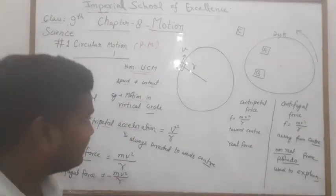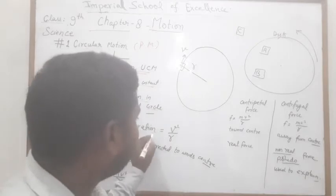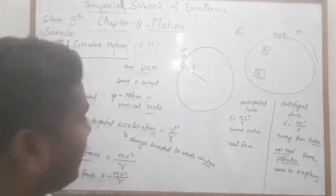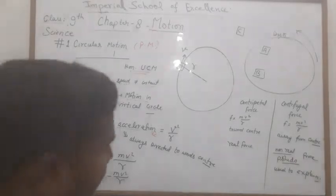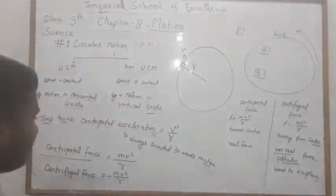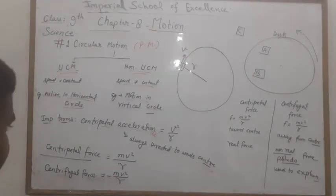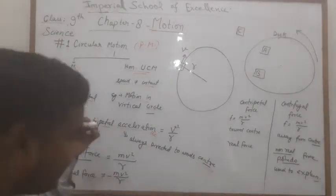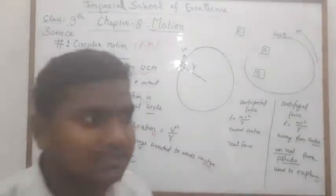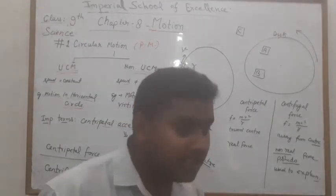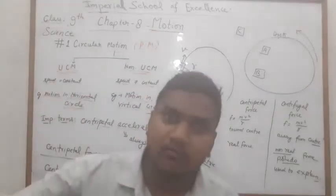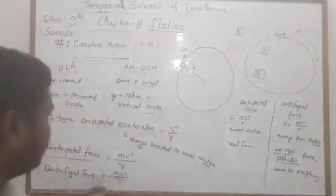So centripetal acceleration Ac की value निकाली: v² upon r, और यह हमेशा toward the center directed होता है। अब जब centripetal acceleration है, तो body का कुछ mass होगा। Mass में acceleration से multiply करें, तो यह आया होगा centripetal force से। तो centripetal force क्या होता है?